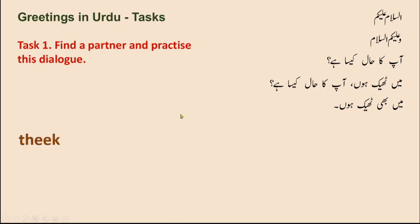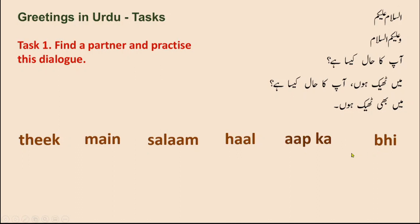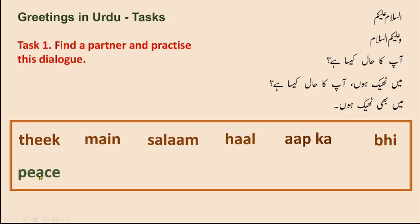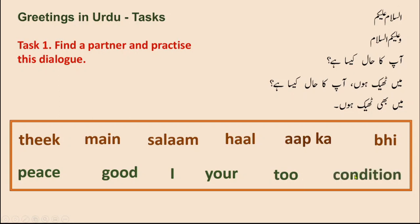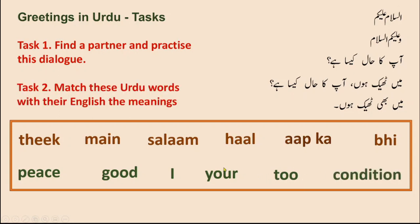Next job: look at these words — Theek, Main, Salaam, Haal, Aapka, Bhi. These are six words from this dialogue, written in Roman Urdu — that means writing Urdu using the Roman letters. Now look at the meanings: peace, good, I, your, too, and condition. These meanings are not in order, so your job is to match the Urdu words with their English meanings.